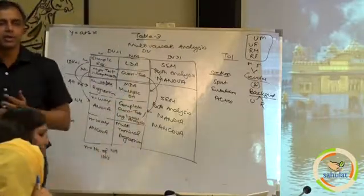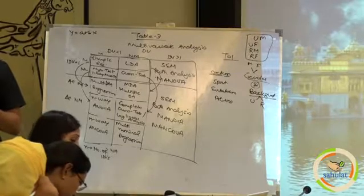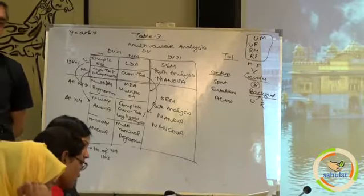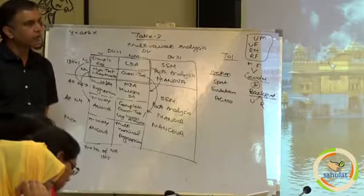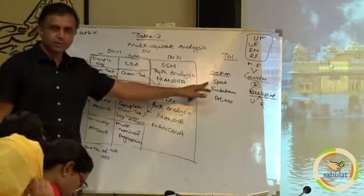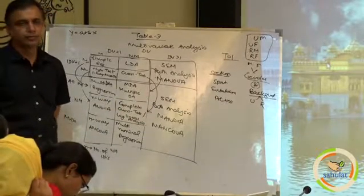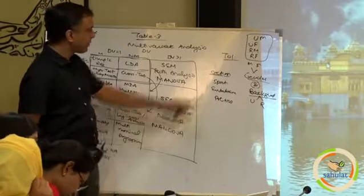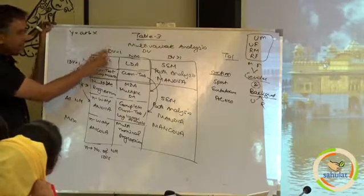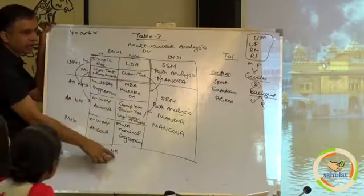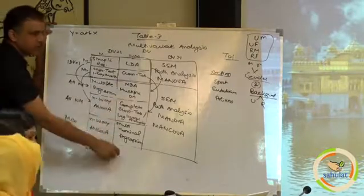Now in table number 3, please look for how many dependent variables there are. How many dependent variables are there? One. Which one? Sections. And what is the measurement of sections? Nominal, ordinal, interval, ratio — nominal. Dependent variable 1 and nominal. So if you refer to table number 3, you come to dependent variable 1 and nonmetric. That means any of the 5 techniques will be applicable.